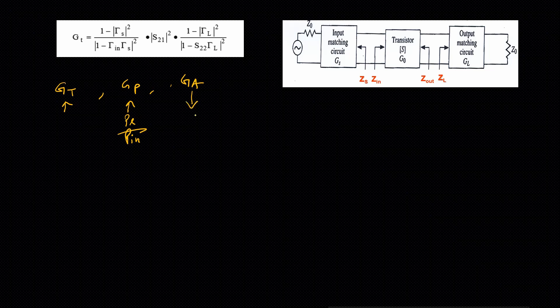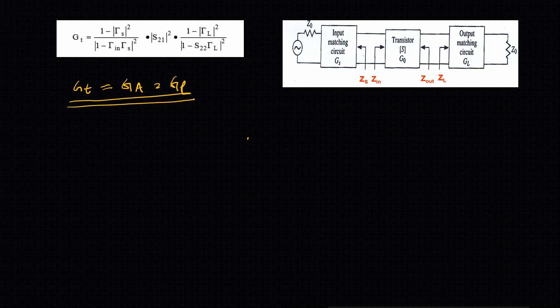We have three gain formulas: G_T, G_P, and G_A. I have derived G_T and G_P already — these are when P_L and P_IN are generalized, as shown in my previous video. For G_A I haven't derived it, but you can derive it following the same procedure. Where I was deriving the B-plus and B-minus terms, at that portion you derive with respect to γ_OUT instead of γ_IN. If you do that you can derive G_A also. I will now show you a situation when G_T equals G_A equals G_P.